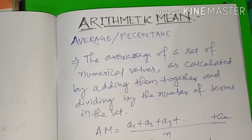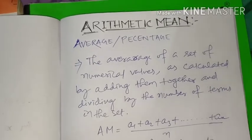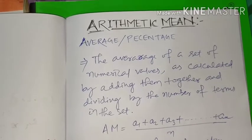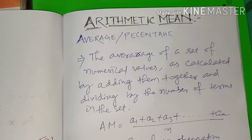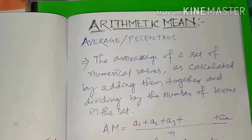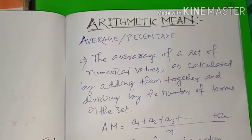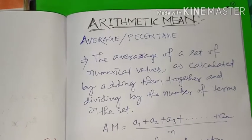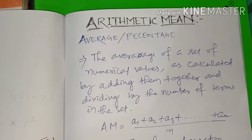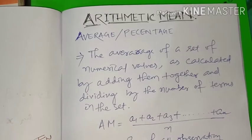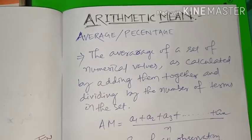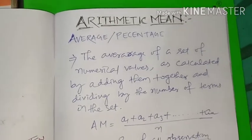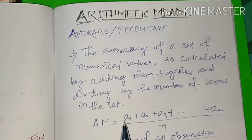Mean is also known as average or percentage. If someone asks you what is your percentage of marks in your last examination, you just add your marks of all subjects then divide by the number of subjects to get your percentage. The average of a set of numerical values, as calculated by adding them together and dividing by the number of terms in the set — this is arithmetic mean.